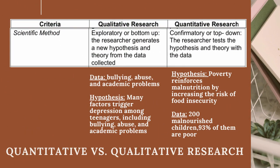Scientific method: Qualitative research method is exploratory or bottom-up. The researcher generates a new hypothesis and theory from the data collected. For example, you have data about bullying, abuse, and academic problems. Your hypothesis is that many factors trigger depression among teenagers, including bullying, abuse, and academic problems.